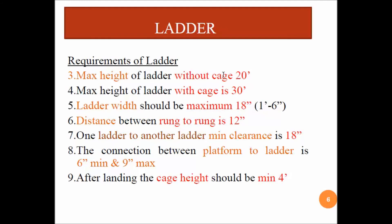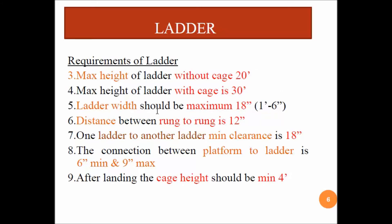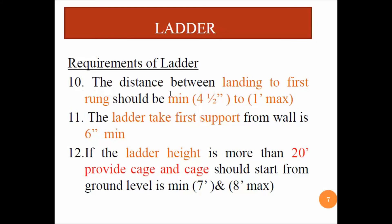Other important specifications to keep in mind: the maximum height of the ladder without a cage is 20 feet, and the maximum height with a cage is 30 feet. Ladder width should be a maximum of 18 inches. Distance between rung to rung is 12 inches. The connection between the platform to rung is 6 inches minimum and 9 inches maximum. After landing, cage height should be a minimum of 4 feet.